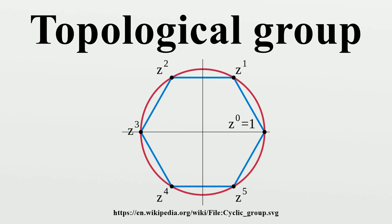Every subgroup of a topological group is itself a topological group when given the subspace topology. If H is a subgroup of G, the set of left or right cosets G/H